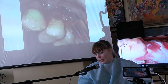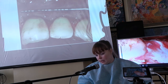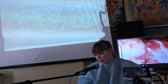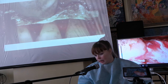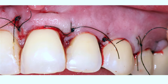Это деэпителизация сосочка, измерение и проверка мобильности, фиксация аллотрансплантата обычными матрасными швами. Затем — свободное ушивание петлевидными швами, о которых мы говорили. Здесь нет никаких дополнительных швов — всё свободно ушито двойными петлевидными швами.